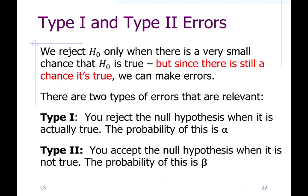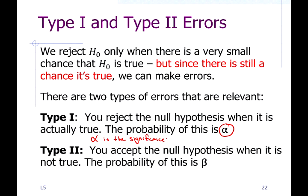In a Type 1 error, you reject the null hypothesis when you're not supposed to, and the probability of that happening is alpha. This is the same alpha we used in the previous unit for confidence interval estimates, and it's called the significance of the hypothesis test. A Type 2 error is when you don't reject the null hypothesis but you're supposed to; the probability of that is beta.